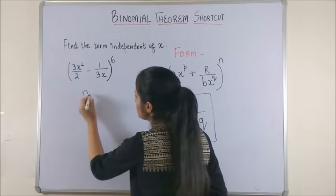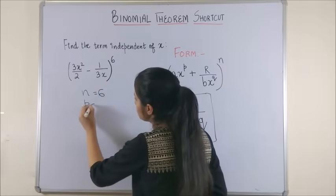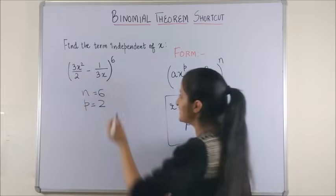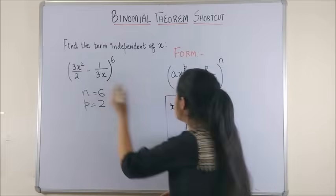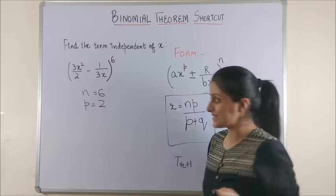Here, in this expression your n is 6, your p if you see is 2. This a is 3 by 2 but we are really not interested. This r is 1, again not interested. Please note, this expression works well whether it is plus or a minus sign.